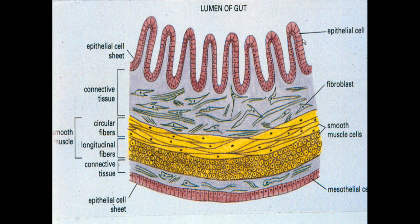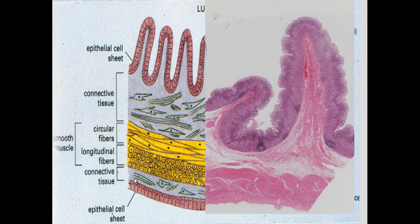Epithelial cells are on the outer side too — these are mesothelium from the mesoderm, as opposed to the epithelium on the inner surface. There are also fibroblasts and smooth muscle layers. Lining the lumen is the epithelial sheet, with junctions between cells allowing it to form a sheet, connective tissue below, then a circular layer of smooth muscle on the inside and longitudinal fibers of smooth muscle on the outside — the muscularis externa — and then another epithelial sheet allowing the intestine to slide within the body cavity.